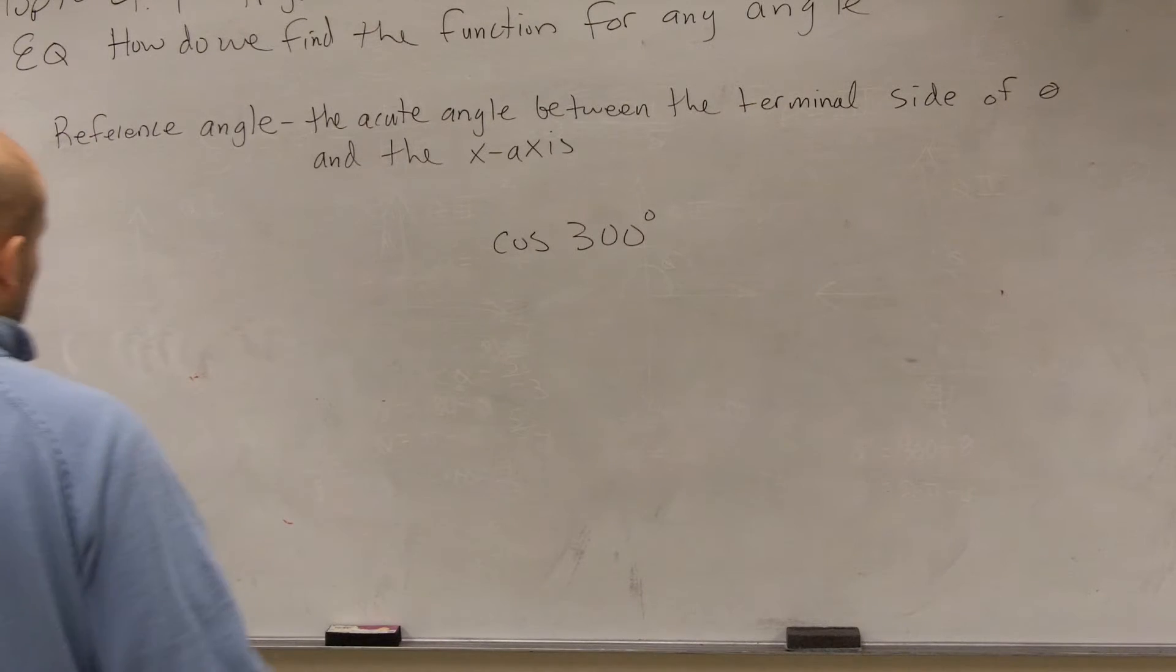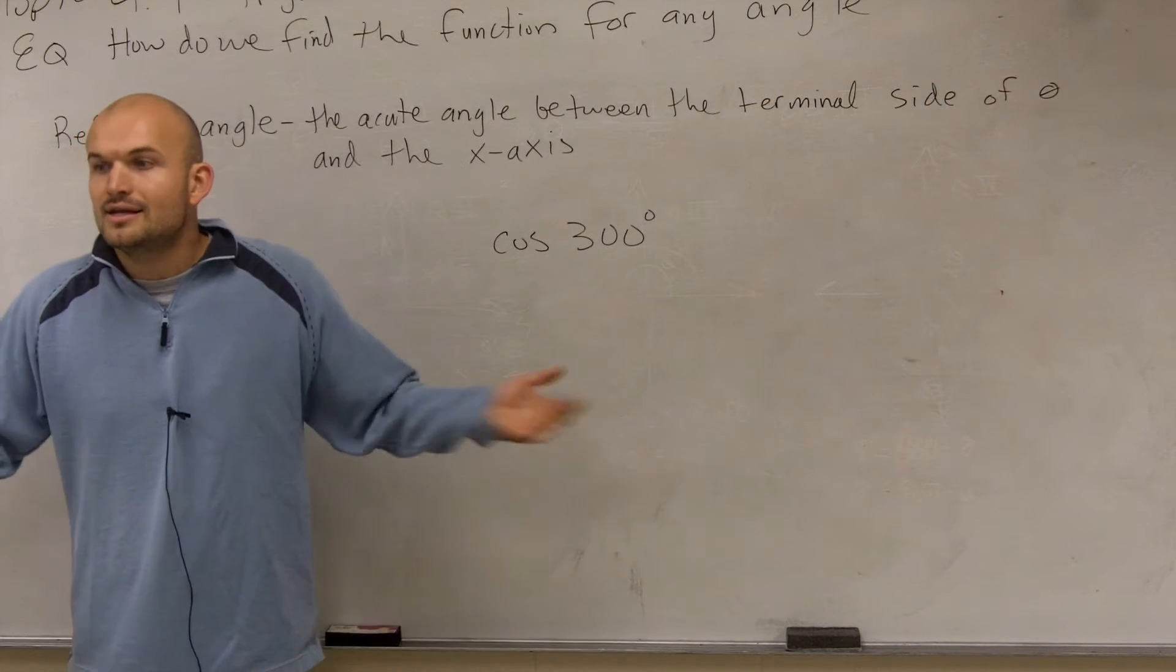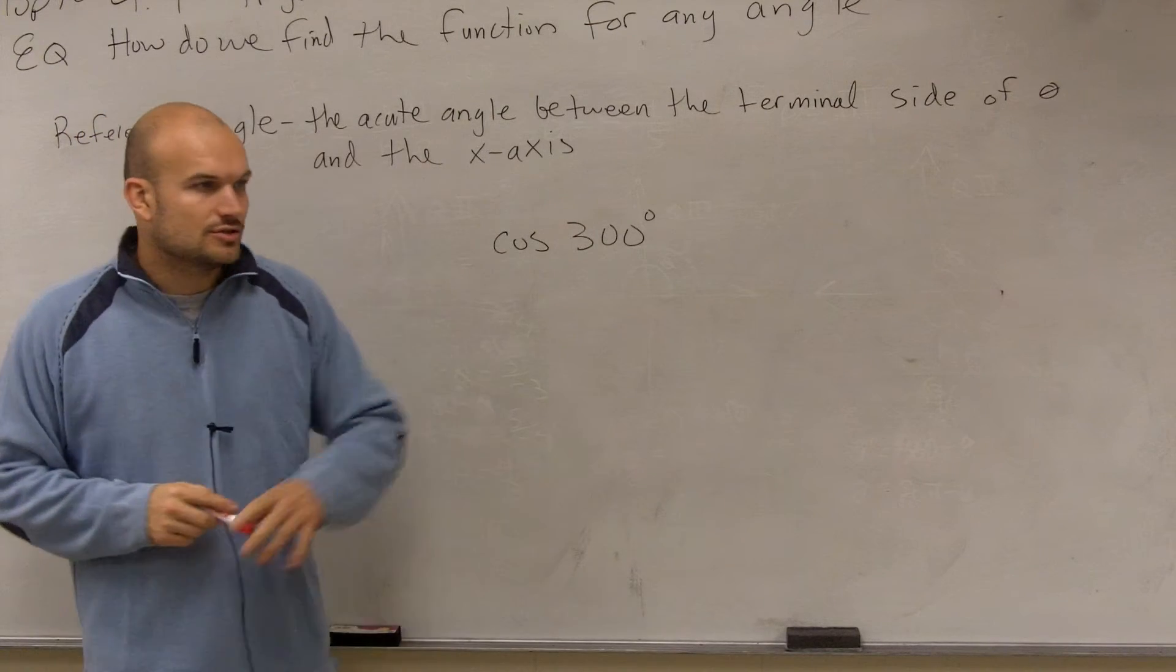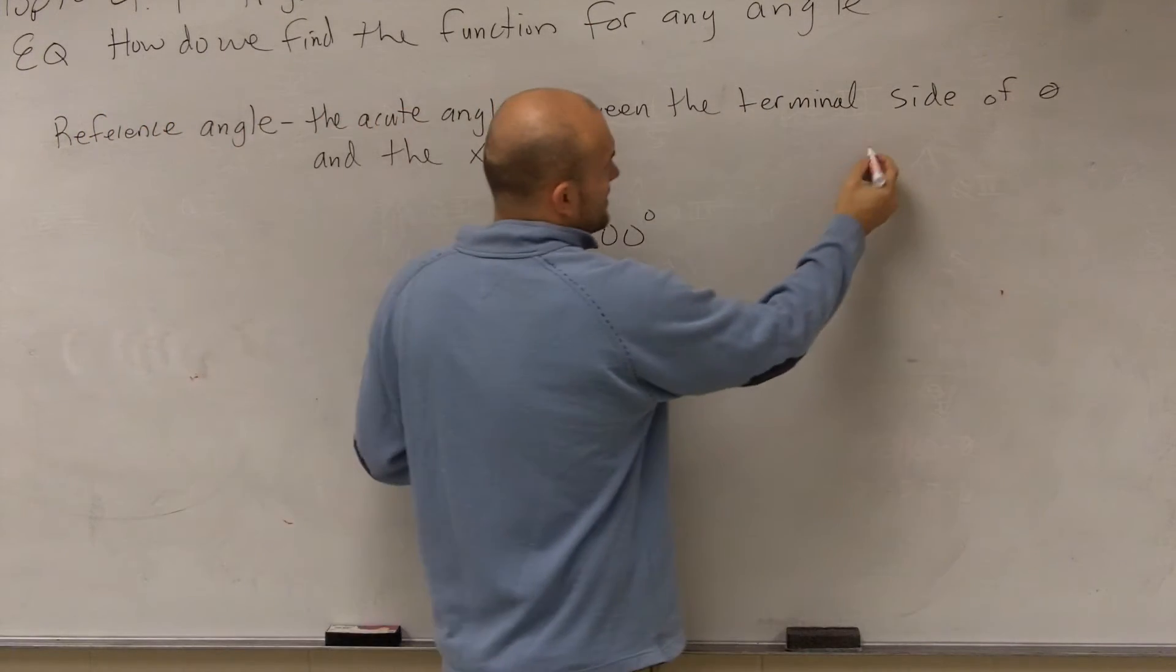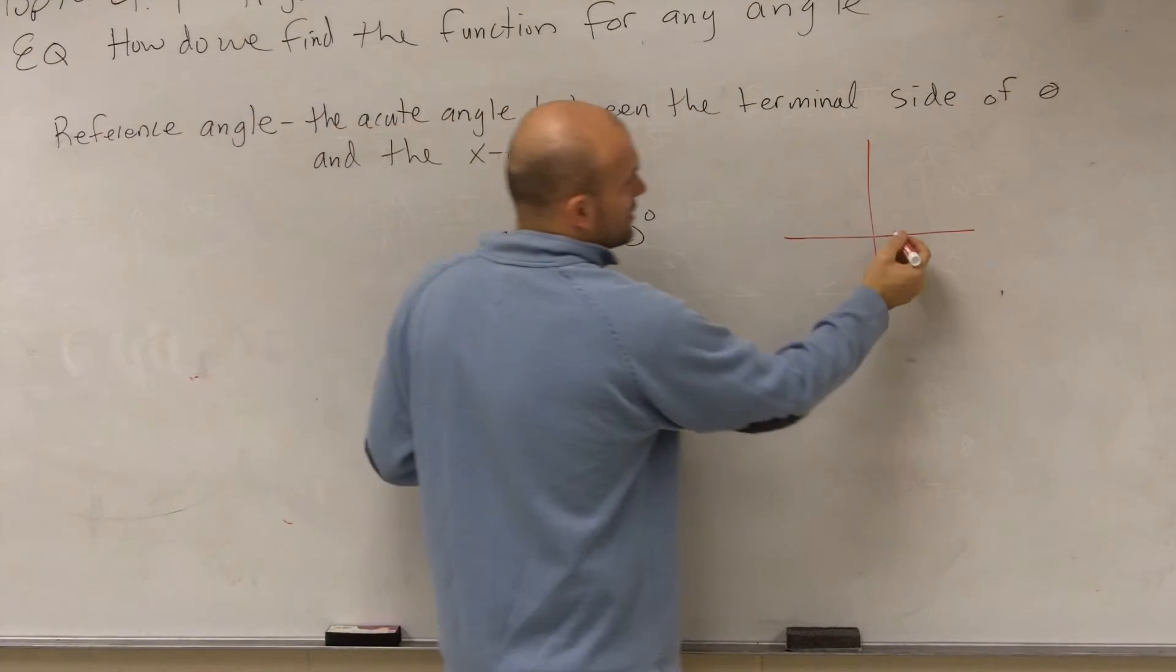OK. So let's say I ask you to find cosine of 300 degrees, alright? Here's the way we did it in the previous chapter. The first thing we did was we graphed the angle. And I even wrote these down for you guys to do it. You graph the angle.